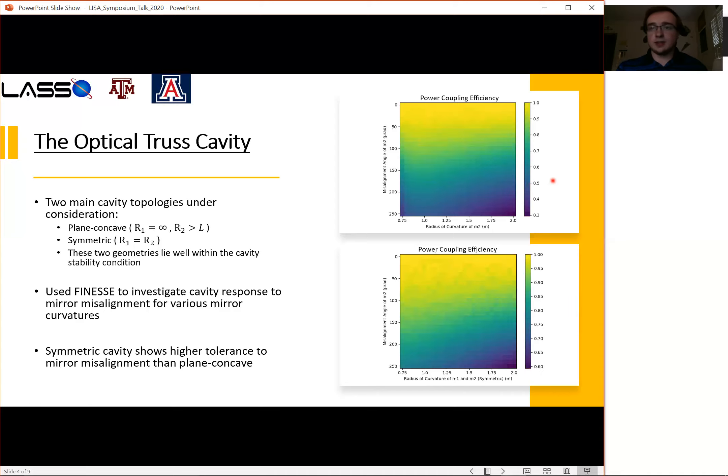The main distinction to be made between these two graphs is the color scale. While these two graphs look very similar, the scaling is actually different. The power coupling efficiency when the color is at dark blue on the upper graph is 0.3. However, down here when the graph is down in the dark blue, the power coupling efficiency is 0.6. With this in mind, it is easy to see that the symmetric cavity geometry is better by about a factor of two and is more tolerant to misalignment of the cavity mirrors.